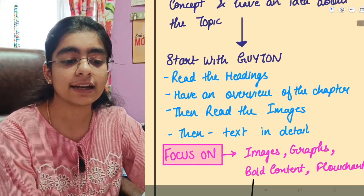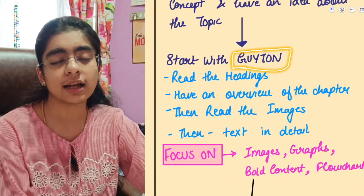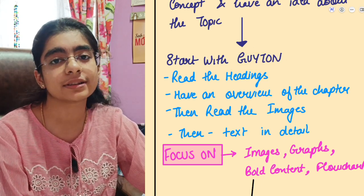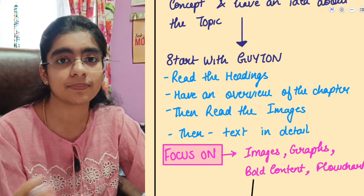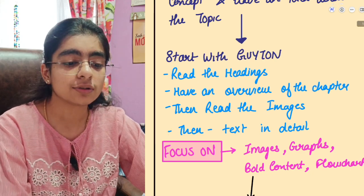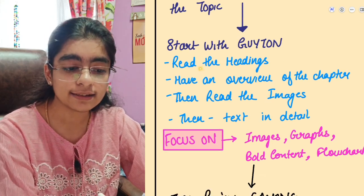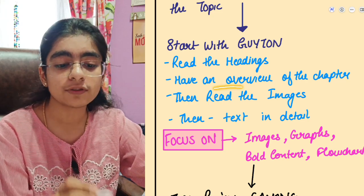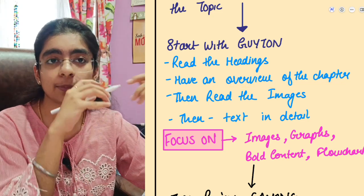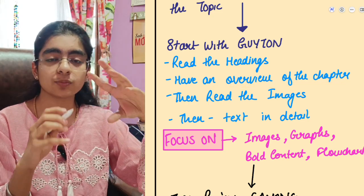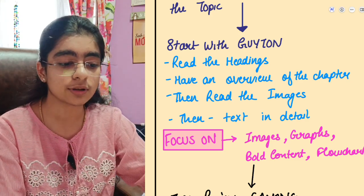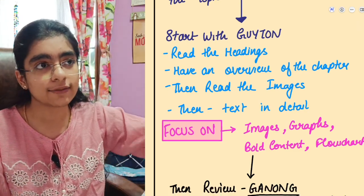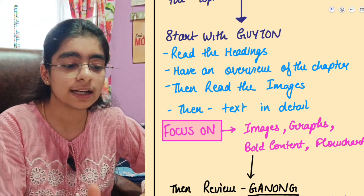Then you have to start with Guyton, which is the gold standard as suggested by teachers, professors, seniors, and everyone in MBBS. First, read the headings — what is there in the chapter — and get an overview. You can make a mind map or write a small summary in a notepad so you know what headings you will be studying in that chapter.